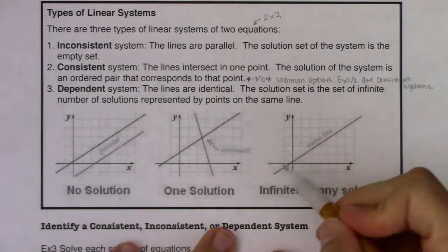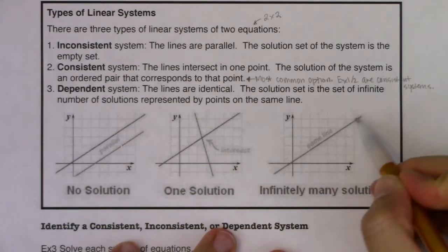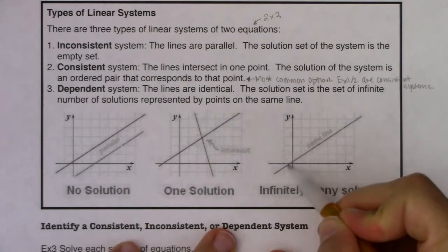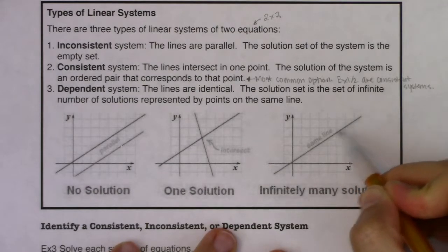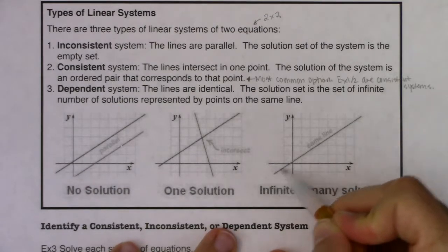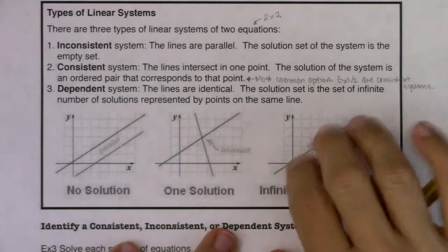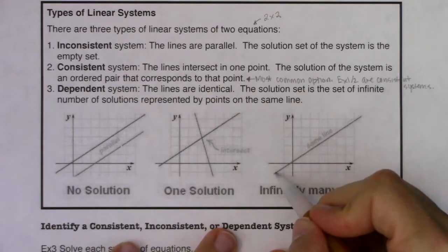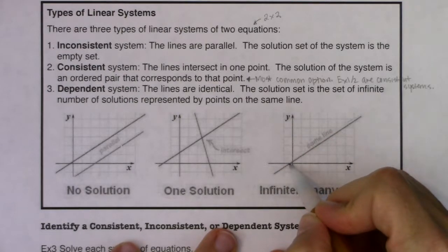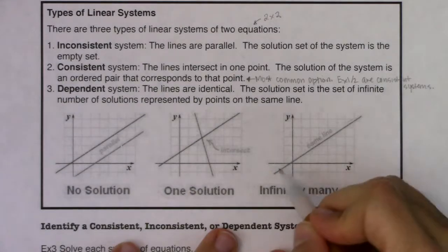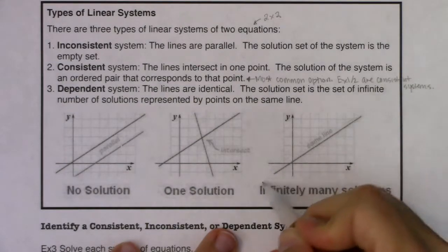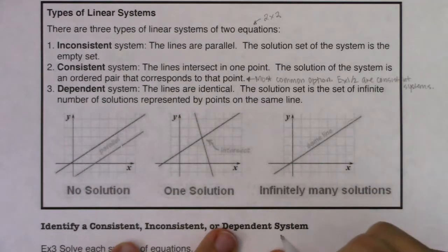What that means is, if I drew one line and then redrew that same line over again, those two lines overlap because they're the same line. So every point on one line is automatically a point on the second line because those lines are the same. There are infinitely many solutions — namely, it's all the points on that line.